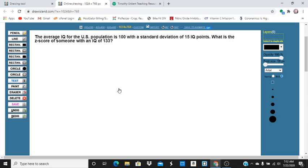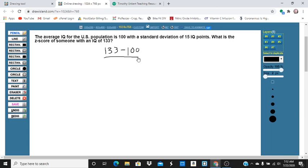To find the Z-score, we want to find the number of standard deviations above or below the mean. We're going to take our data point, 133, subtract the mean, 100, and divide by the standard deviation, 15.